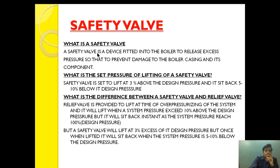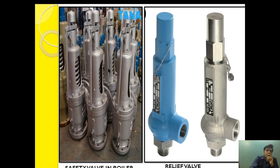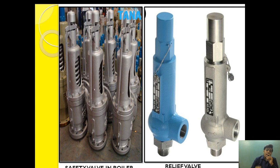Basically, a safety valve is a device fitted into the boiler to release excess pressure so as to prevent damage to the boiler casing and its components. As you can see, this safety valve is mounted onto the boiler steam drum so that if there is excess pressure it will release instantaneously, preventing damage to the boiler casing.